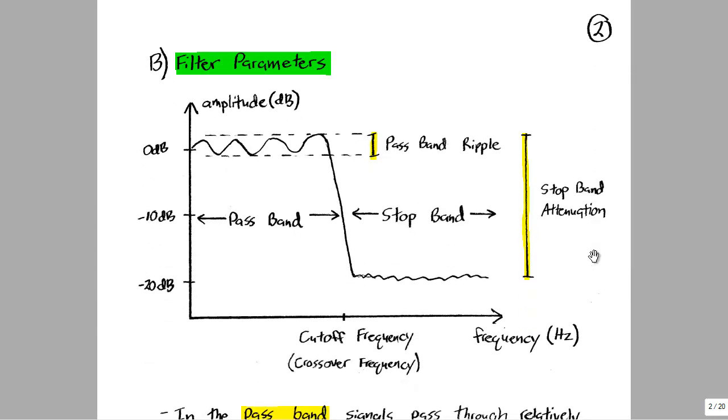Designing a digital filter requires knowledge about the filter parameters you want to achieve in your final design. These are referred to as the pass band and the stop band. In between that you have the cutoff frequency, which is the transition between the pass band and the stop band.